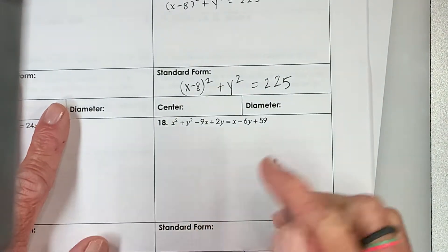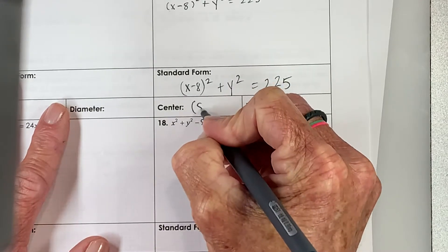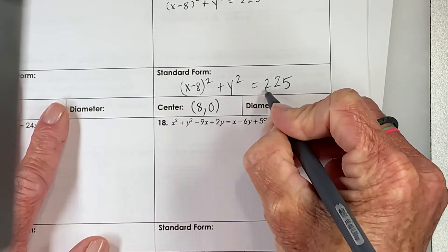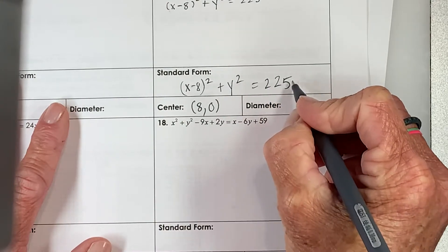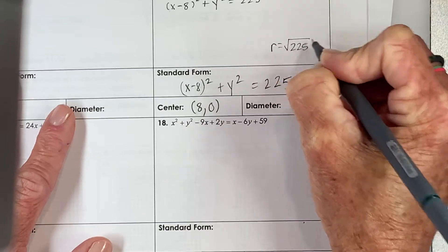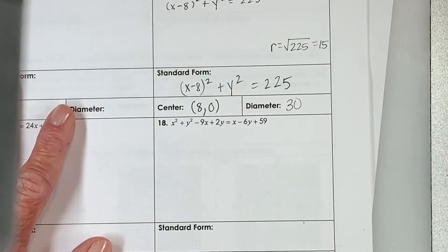That's the equation of our circle, and the center is located at what's being subtracted from x, 8. What's being subtracted from y, nothing. And then we take the square root of this to get the radius. So the radius is equal to the square root of 225, which is just 15, and then we're going to double that to get our diameter of 30.